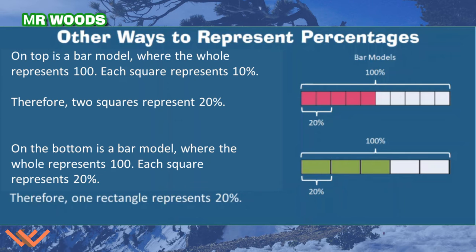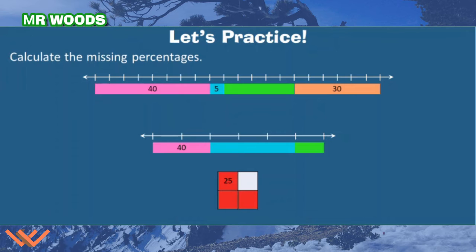On the bottom, it's a bar model as well. However, there are fewer rectangles here — there are 1, 2, 3, 4, 5 squares. So I know that 5 times 20 is equal to 100, so each square must be 20%.